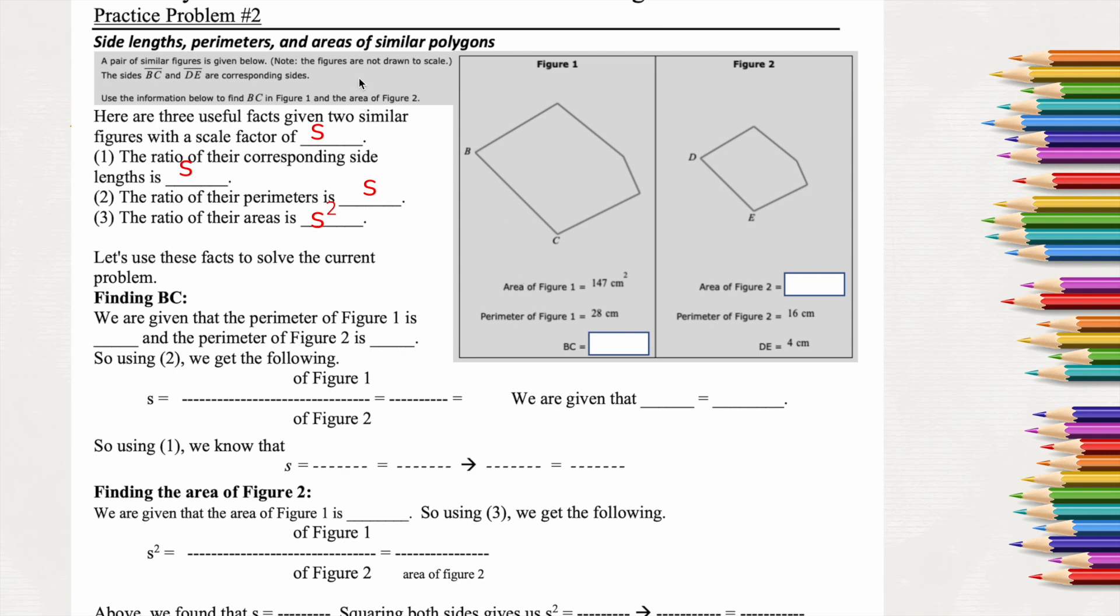Alright, so if we look at this one, it says a pair of similar figures given below, and note they're not drawn to scale. The sides BC and DE are corresponding sides, so they're already showing us that. Those are the only two sides they labeled. Use the information below to find BC in figure 1 and the area in figure 2.